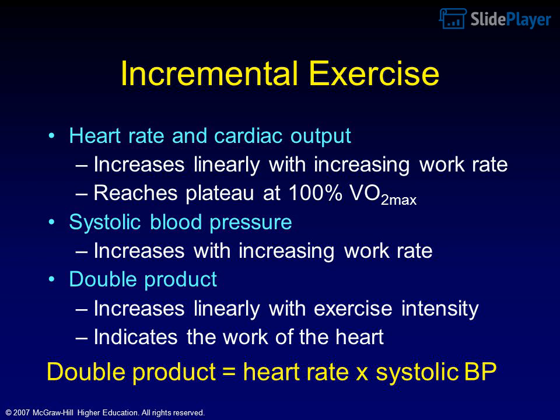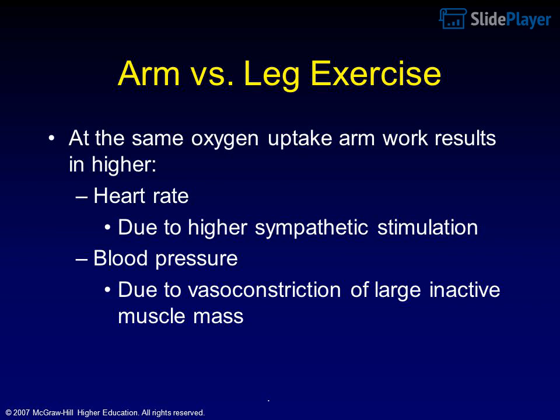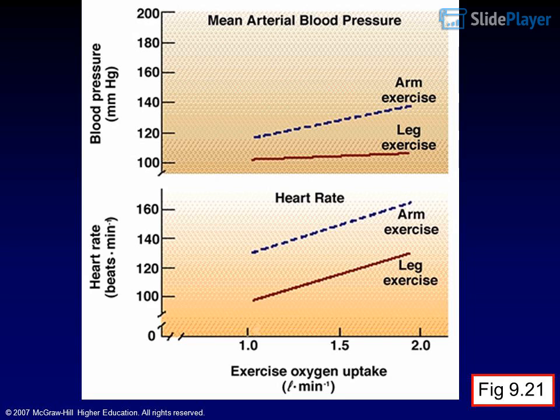Arm versus leg exercise: at the same oxygen uptake, arm work results in higher heart rate due to greater sympathetic stimulation, and higher blood pressure due to vasoconstriction of the large inactive muscle mass. Heart rate and blood pressure during arm and leg exercise are compared in Figure 9.21.